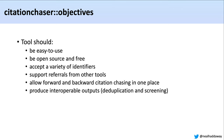So we wanted to produce a tool called Citation Chaser to address this. Our objectives were that the tool should be easy to use, open source and free, accept a variety of starting identifiers, and allow people to refer into the tool from other tools like review management software. We wanted to allow for forward and backward citation chasing all in one place, and produce interoperable outputs — in our case, RIS files — that could be fed back into the deduplication and screening process.